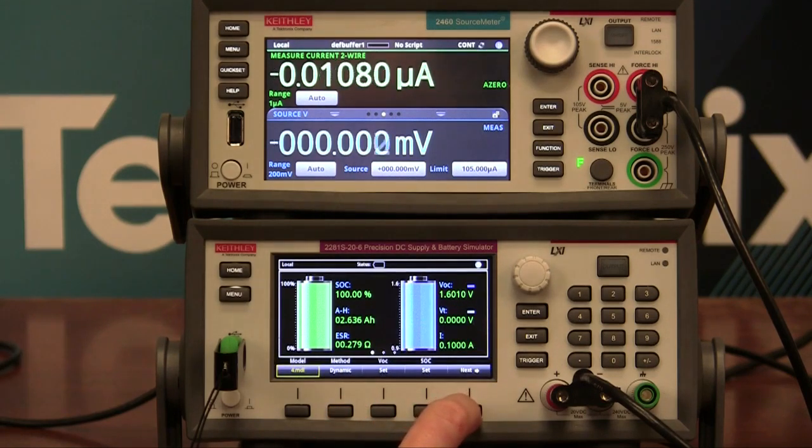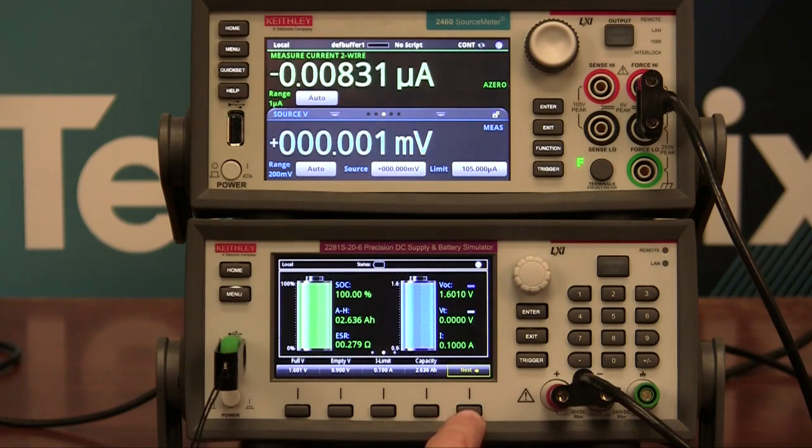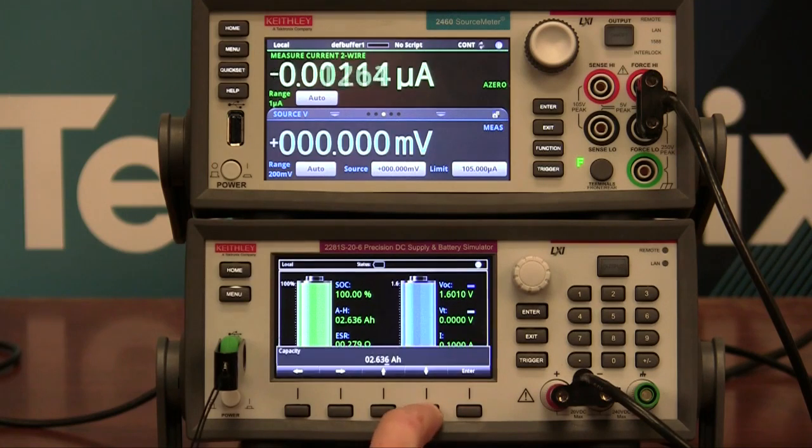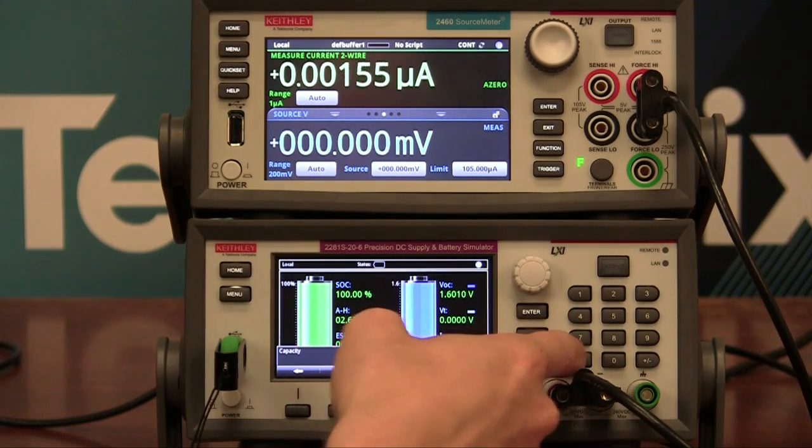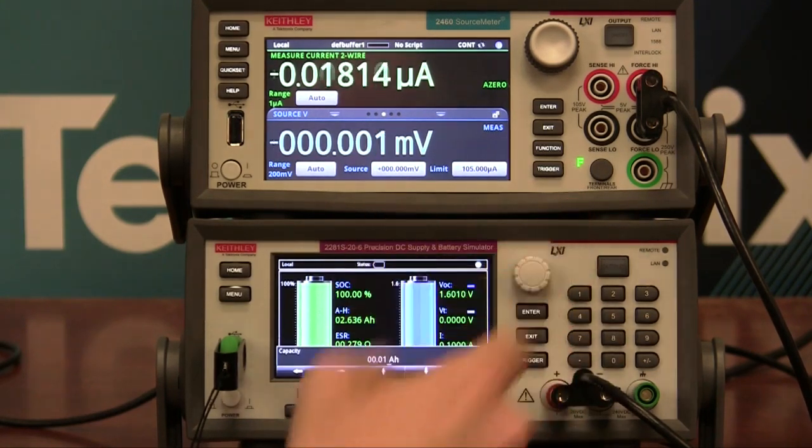And the whole point of this is to set the capacity to be very low, so that we can discharge very quickly. So from that screen you were just on, press Next down here, and change the capacity to 0.01 amp hours.